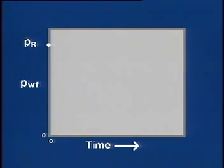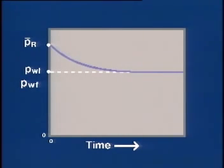Now let's look for a moment at a pressure versus time plot. Without going into the laws of flow, we can state that if we open a well to production at a reasonably constant flow rate, the flowing bottom hole pressure, P sub WF, will soon stabilize.